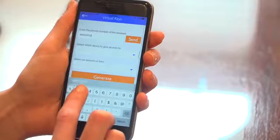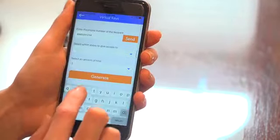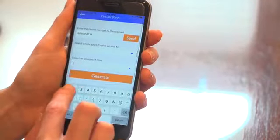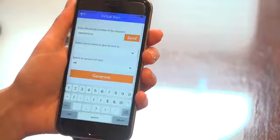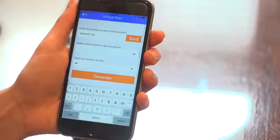After here, Boltevate will automatically text that person a code that will permit them access. They can text back lock or unlock, or download the app to enter the code.